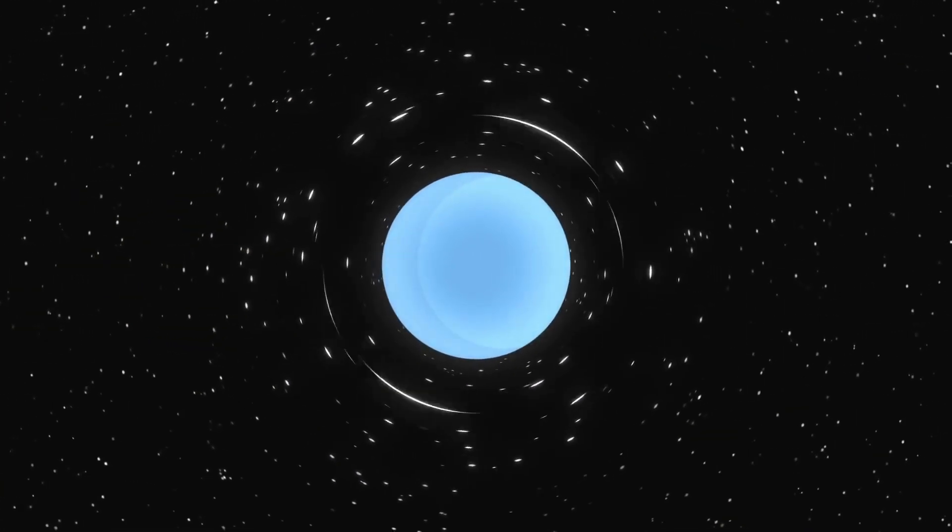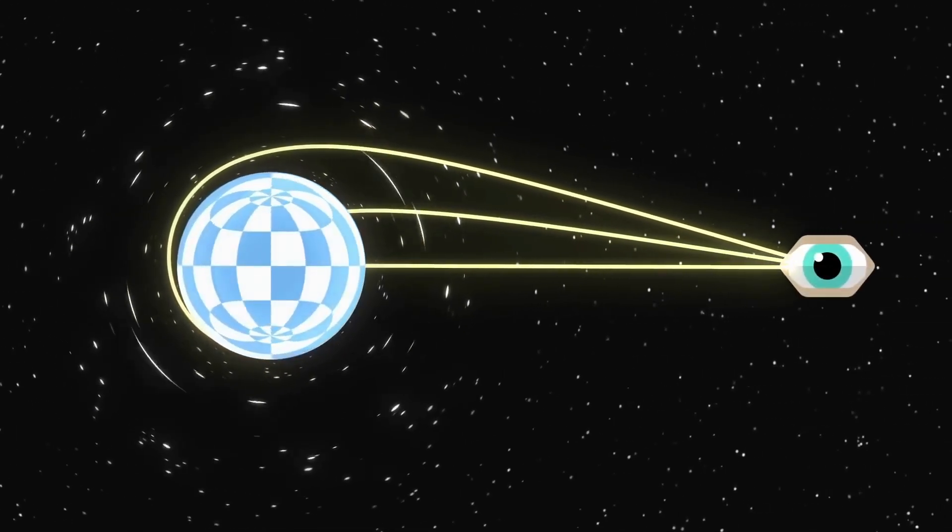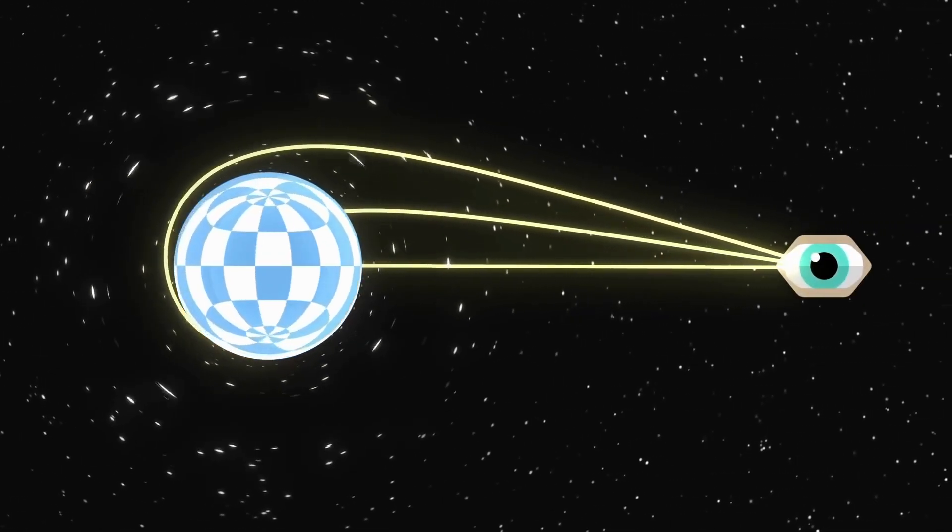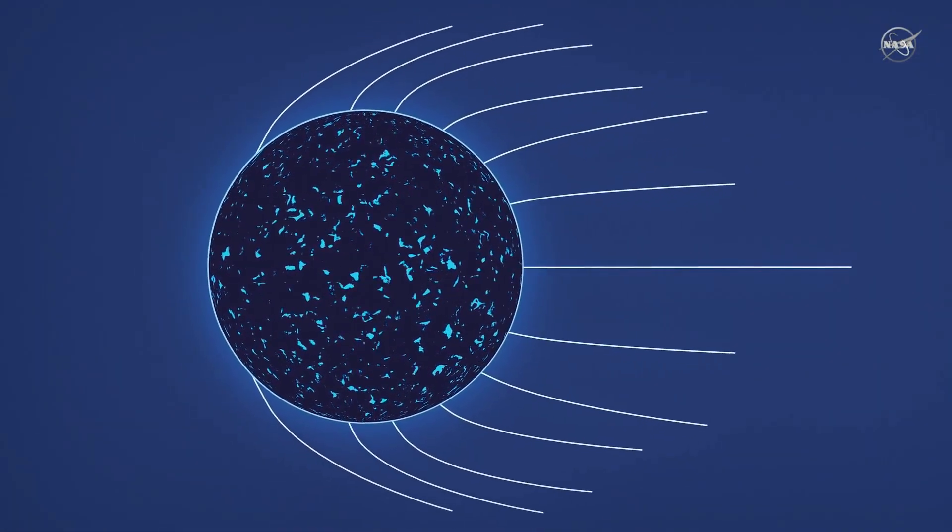This causes significant light deflection, revealing over half of the surface from a single point, including the typically unseen rear surface. Photons can even become trapped in the orbit of a neutron star.